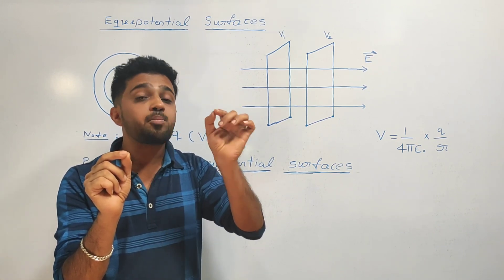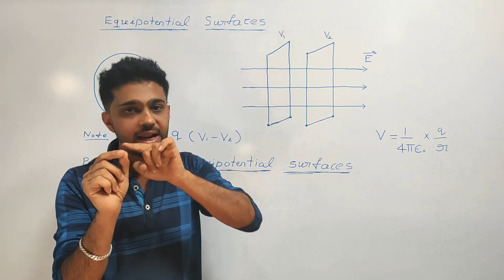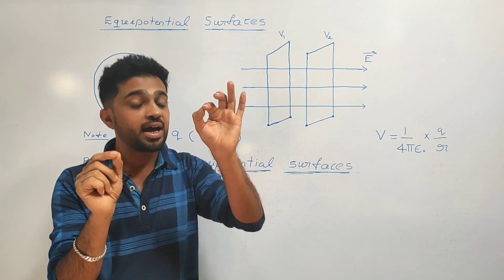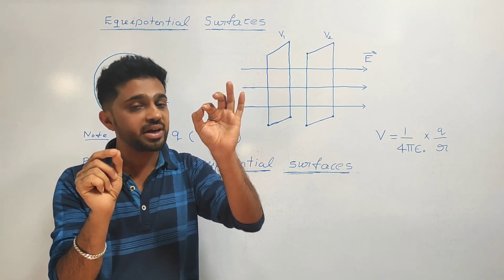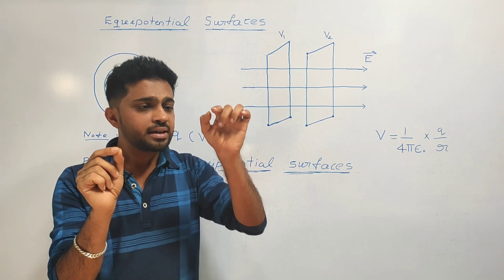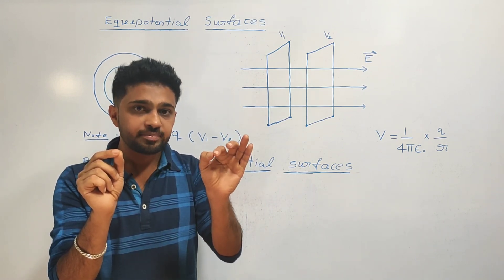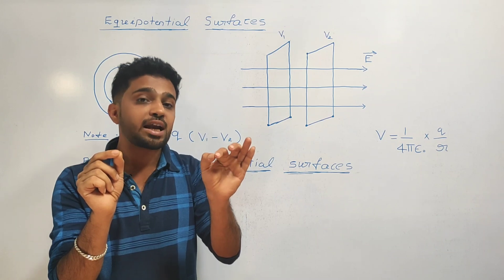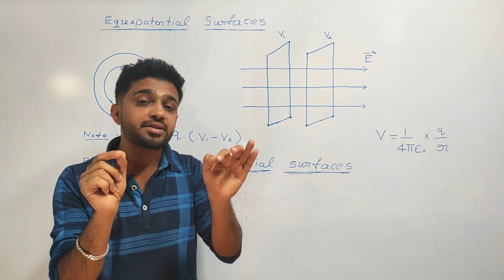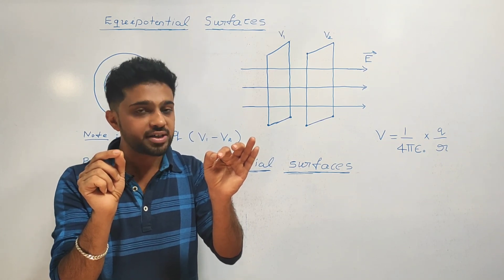R is 0.5 meter. I'm going to calculate the electrostatic potential at distance 0.5 meter. At any other point also at distance 0.5 meter, we can calculate the electrostatic potential.